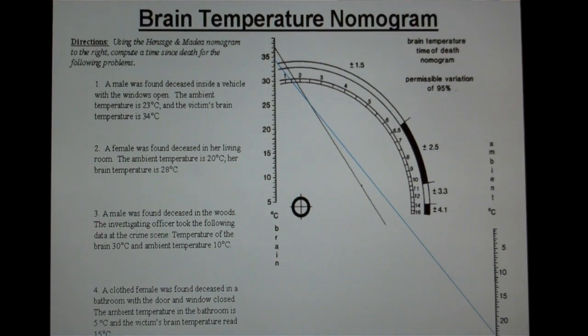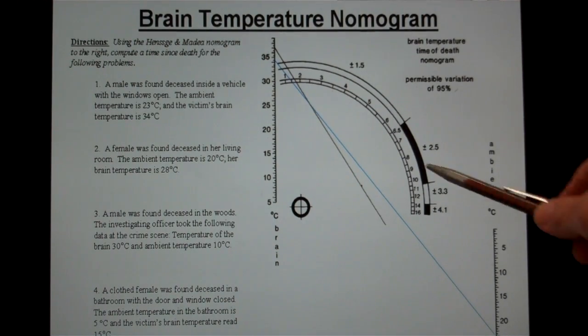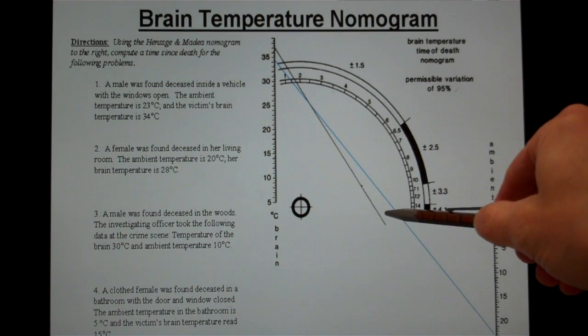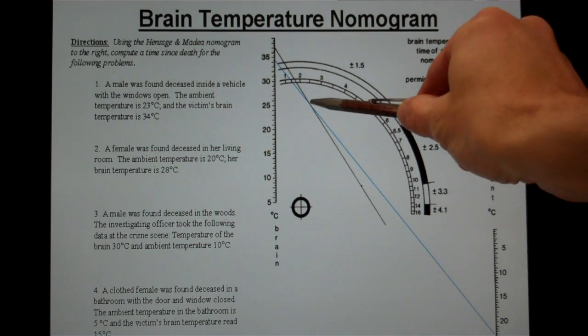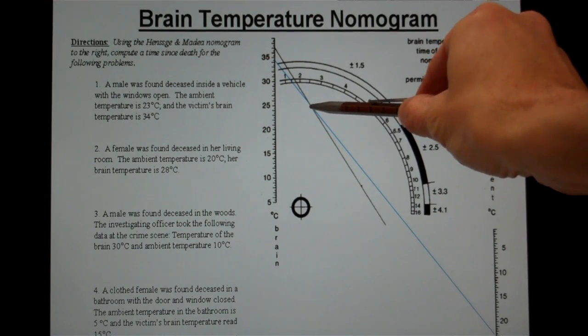Now, once I've done that, I'm going to look where my blue line crossed the diagonal line that was part of the nomogram. In this case, it's approximately right here at this point.